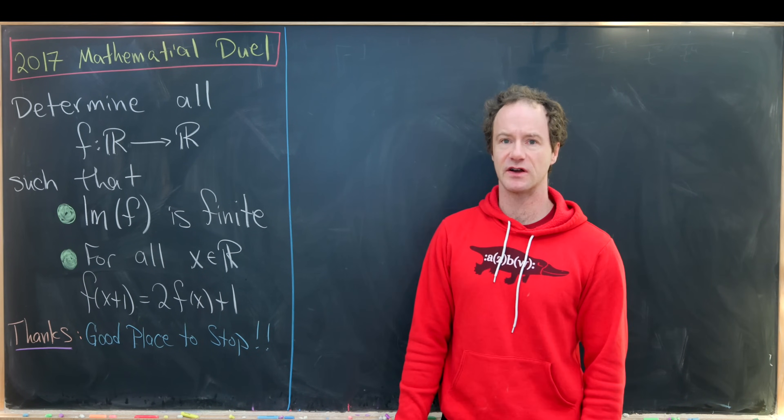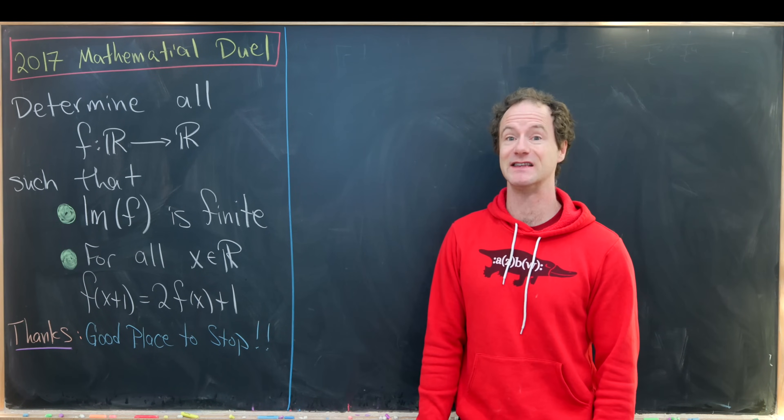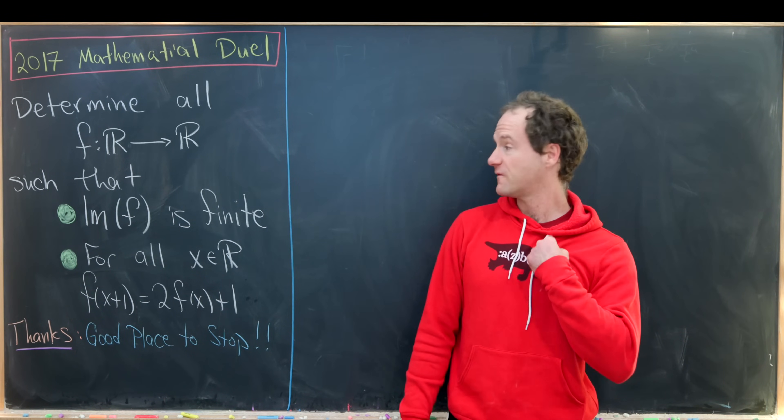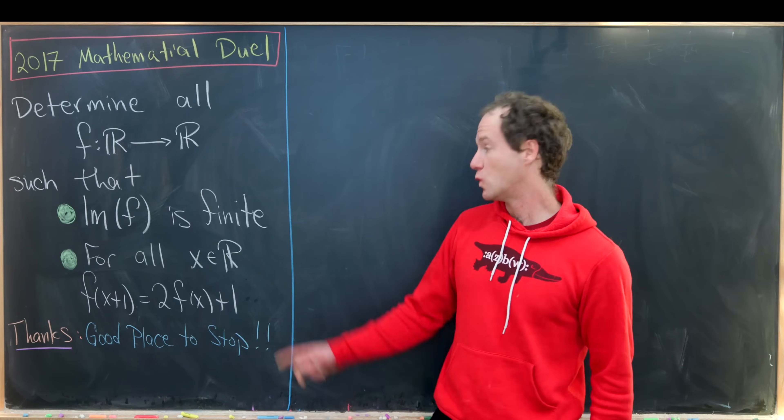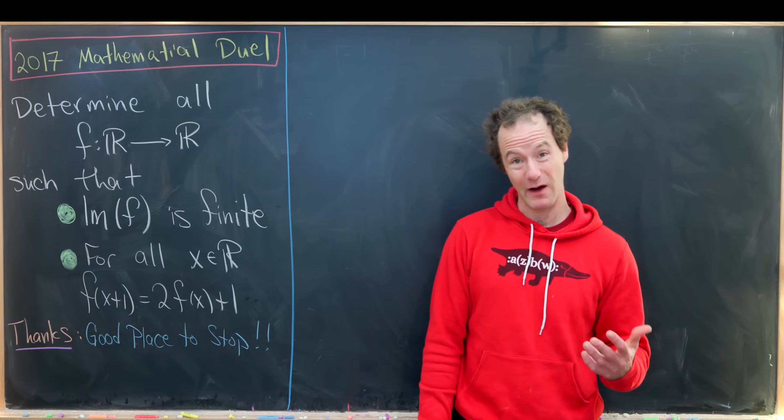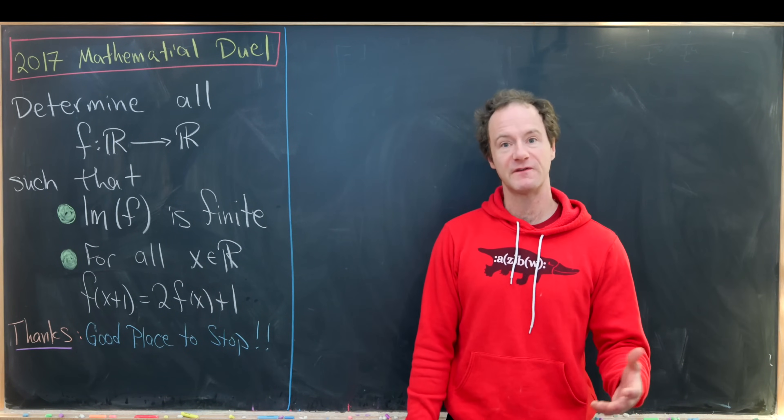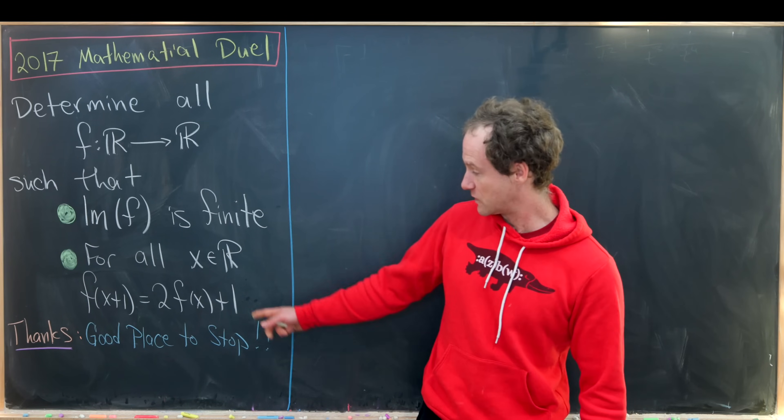I think probably a good strategy here is to guess a fairly simple solution and show that is the only solution. And in order to find the fairly simple solution, we'll look at the simplest case of the image being finite, and that would be the image only being one value. But if that image is only one value, then we've got